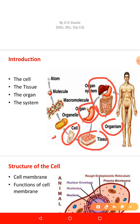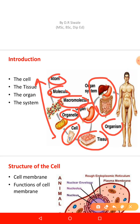We can also go further down and break the cell apart. The cell is made up of organelles, and those organelles are made up of macromolecules. Those same macromolecules are made up of molecules, and the smallest unit is an atom.